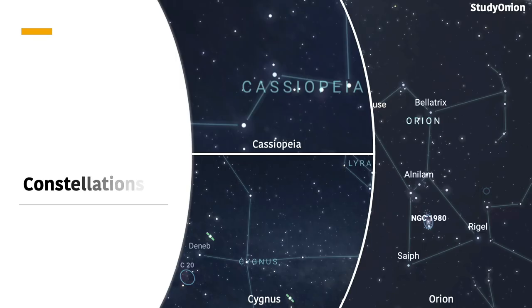There are three main constellations you have to learn to recognise and draw for the GCSE astronomy course. The first one you must know is Cassiopeia, and it looks like a W shape, which you can see on the screen now. These images are from Stellarium, which we'll talk about a little bit later.